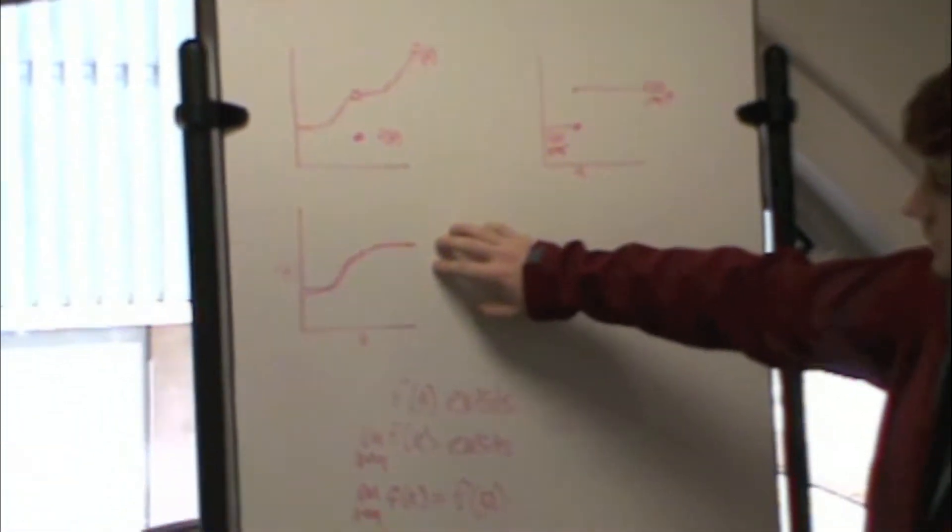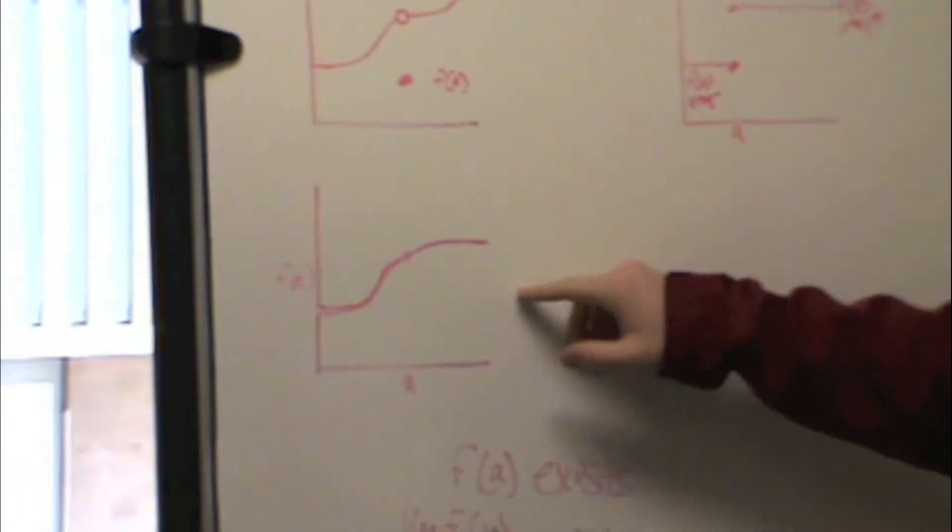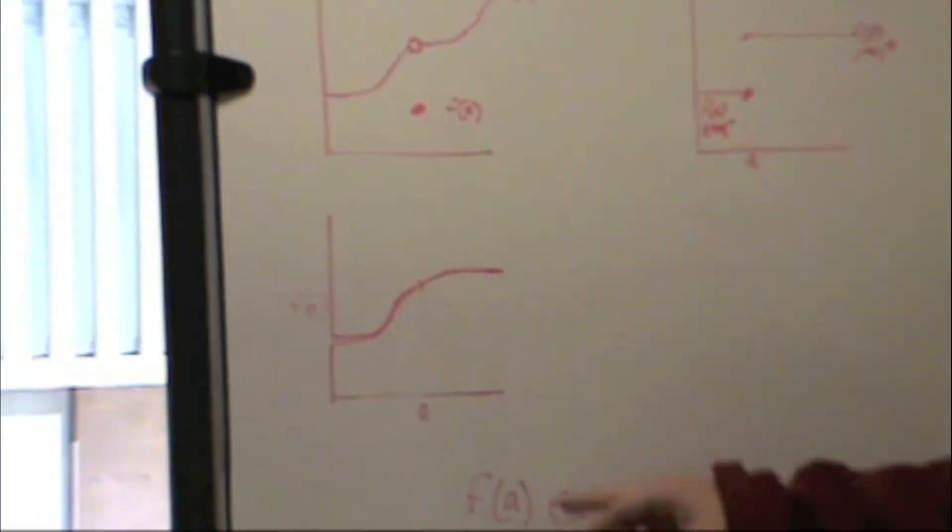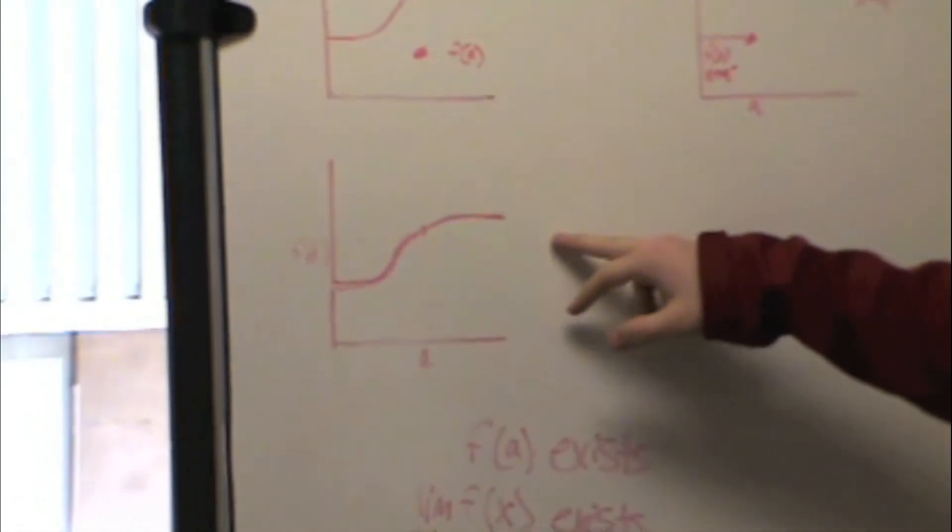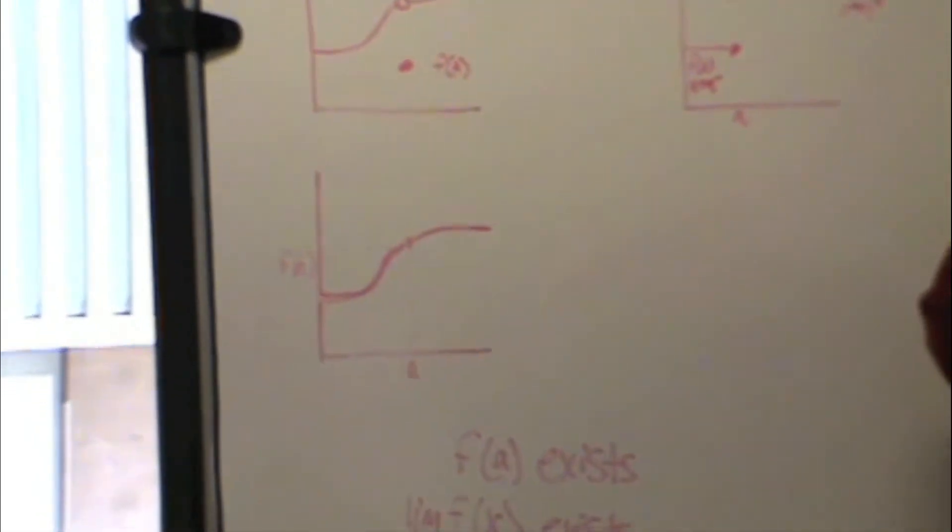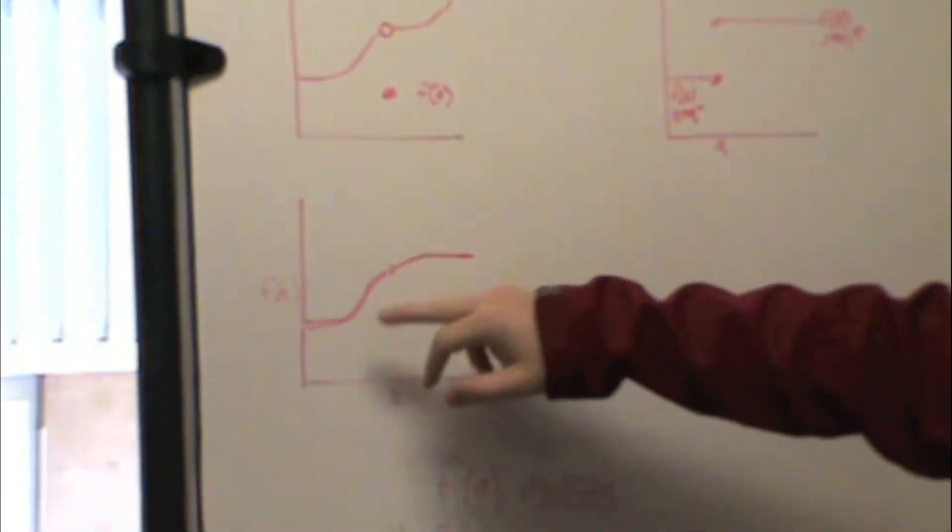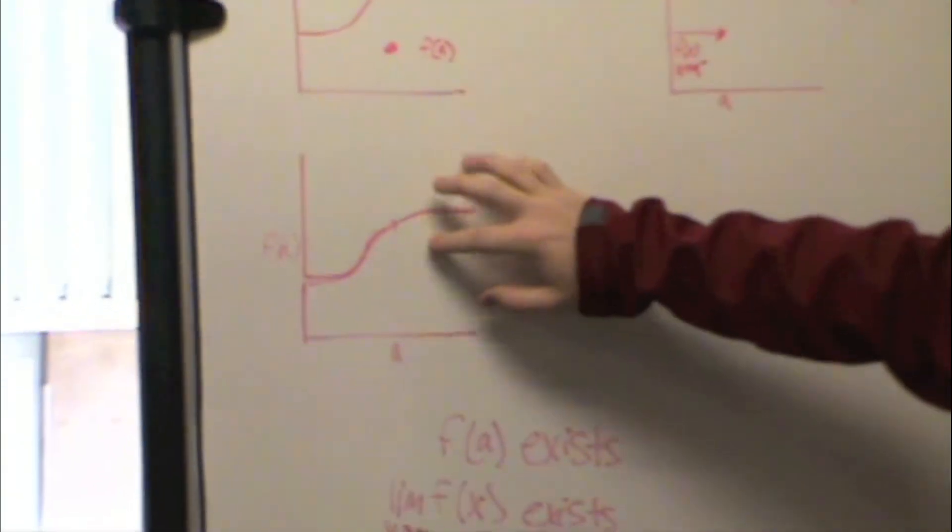And this one is continuous. This fits all three because it's continuous all the way through, there's no breaks, and f of a exists in this function.